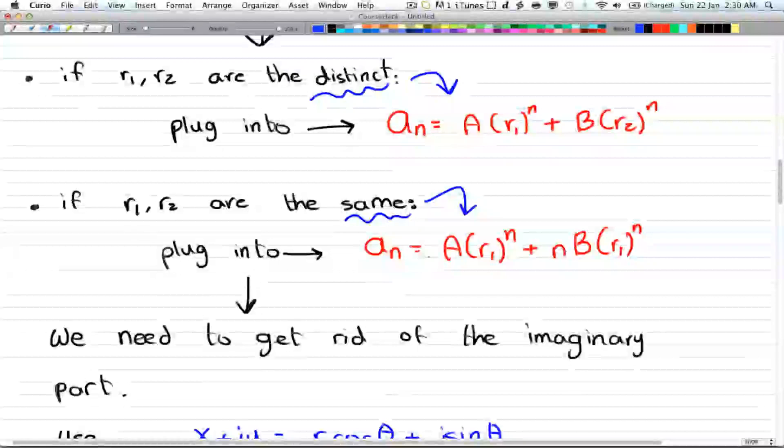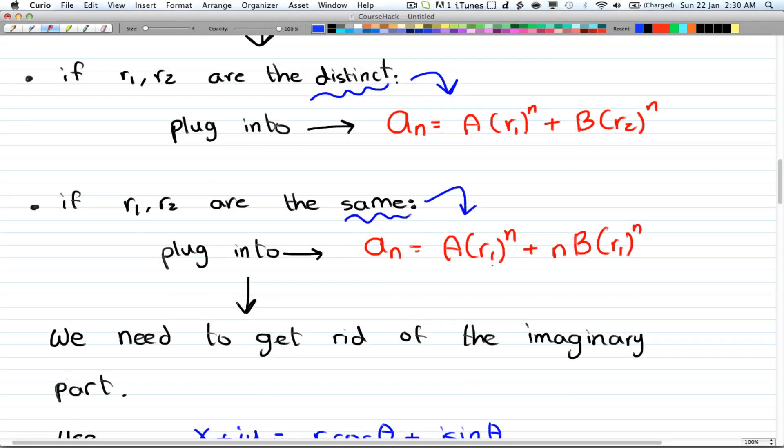However, if they're the same, you have a_n = A(r₁)^n + nB(r₁)^n. So the only difference is we have this n over here.